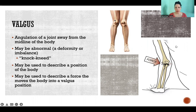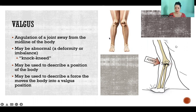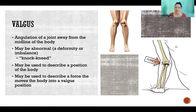Like in this picture here, this is an example of someone with knee valgus, also referred to as knock-kneed. If you look at the angle that's made between the femur and the tibia, we have this angle that's sort of angling away from the midline of the body — and that's valgus.